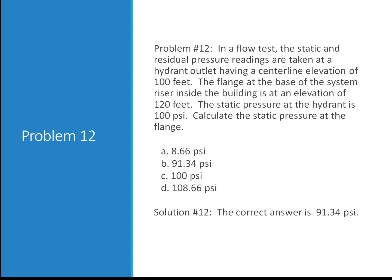Problem 12. In a flow test, the static and residual pressure readings are taken at a hydrant outlet having a centerline elevation of 100 feet. The flange at the base of the system riser inside the building is at an elevation of 120 feet. The static pressure at the hydrant is 100 PSI. Calculate the static pressure at the flange. Is it A, 8.66 PSI, B, 91.34 PSI, C, 100 PSI, or D, 108.66 PSI?